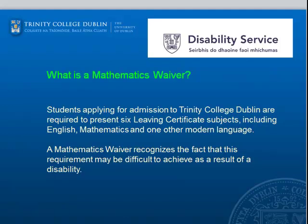What is a maths waiver? Students applying for admission to Trinity College are required to present six Leaving Certificate subjects including English, Maths, and one modern language. A maths waiver recognises the fact that this requirement may be difficult to achieve as a result of a disability.